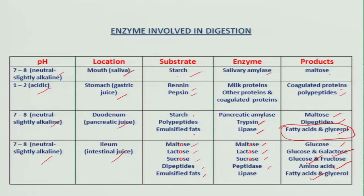This is, in brief, the enzymes involved in the digestion of food and how it is converted into simpler forms — broken down from each stage to the final stage when it reaches the ileum and gets absorbed. We have seen the digestion, absorption, and utilization of nutrients throughout the gastrointestinal tract, and with this we complete the digestion part. Thank you.